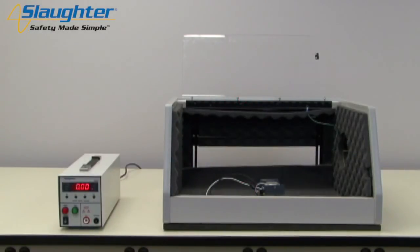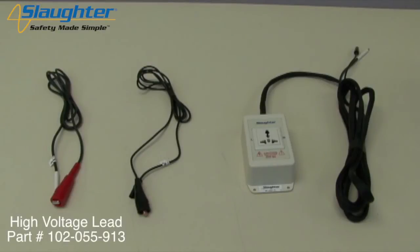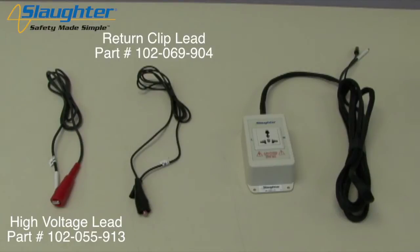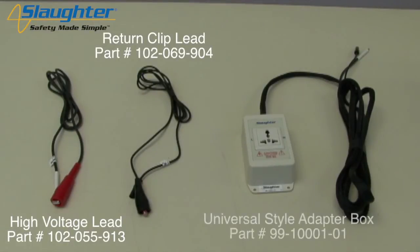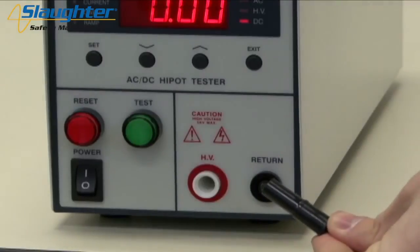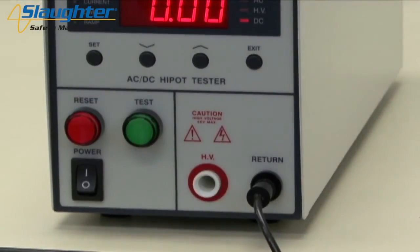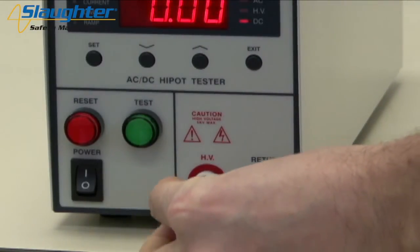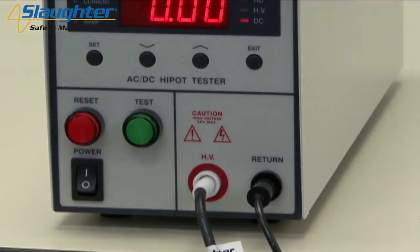Finally, we're going to show you how to connect the 2550 to a DUT and run the test we have set up. To connect the 2550 to the DUT, you're going to need the following accessories: the high voltage lead and the return clip lead. You can also use an optional universal style adapter box instead of the clip leads. First, plug the sheathed black connector of the return lead into the return terminal of the 2550 tester. Now connect the high voltage lead by plugging the white Alden style connector into the HV terminal on the 2550.